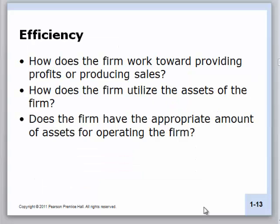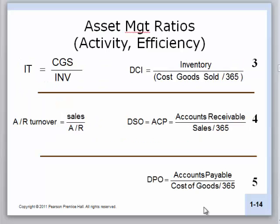The next set of ratios refers to something called efficiency — how does this company actually work? There are two things we want to analyze: can they produce sales with the things they've purchased, and can they produce profit? How do they utilize these assets? This is really a management question: how well do they manage the assets of the company? Do they have the right amount of assets — too much, too little? The first ratios we want to pay attention to are DCI, DSO, and DPO.